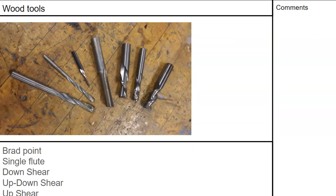For wood tools, there's still a lot of the same materials — high-speed steel and carbide. You have the brad point, single flute, and single flute brazed. One of the things you'll find with wood is that tools will have up shear, up-down shear, and down shear. You have to be a little careful running those tools correctly — even though they could technically be used for steel, they shouldn't be.